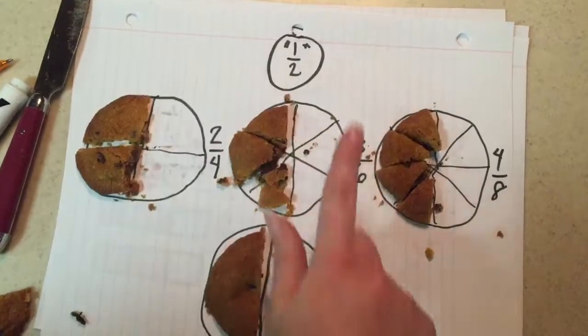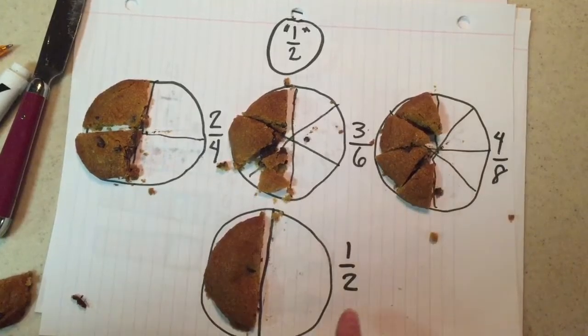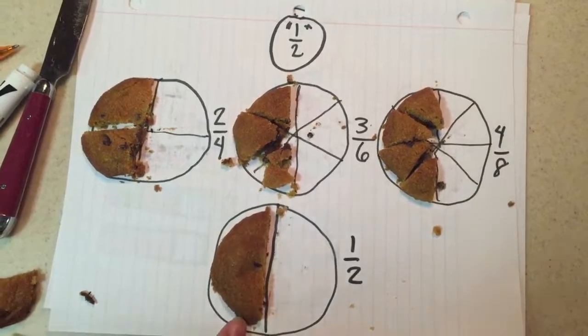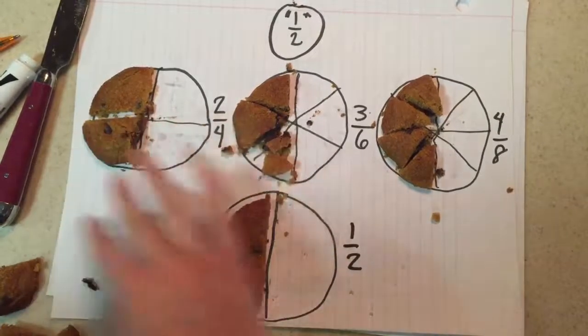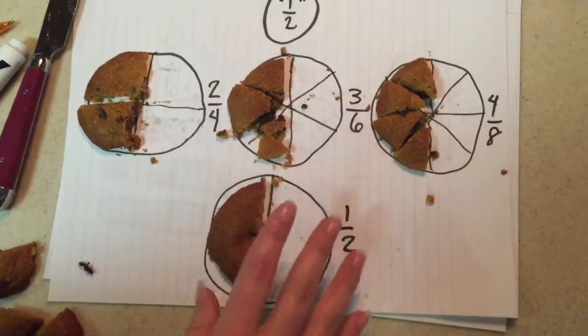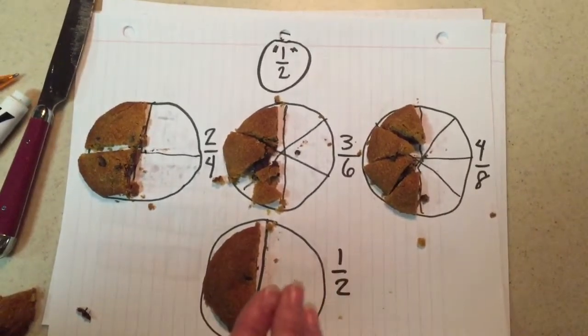Two-fourths, three-sixths, and four-eighths is equal to one-half. So these are all different names for the same number, which is an equivalent fraction.